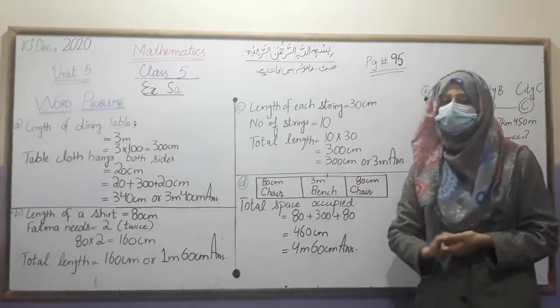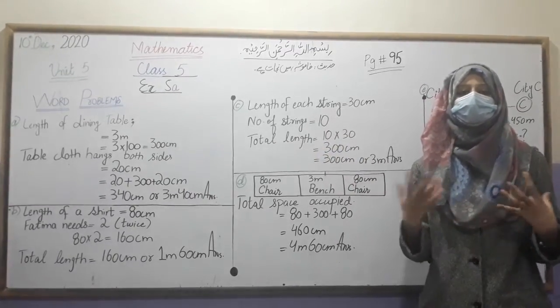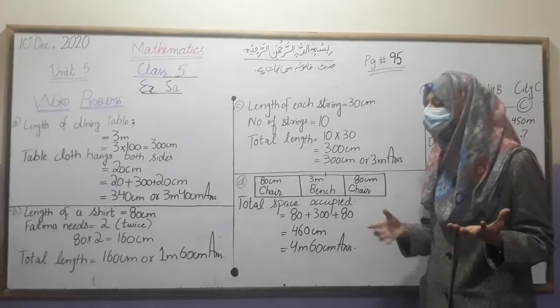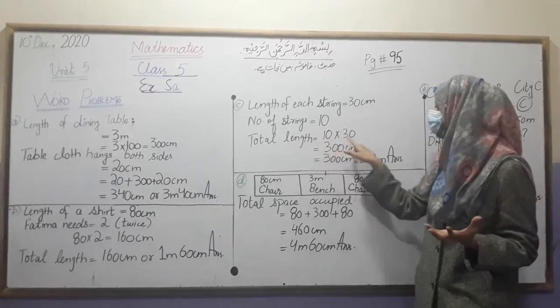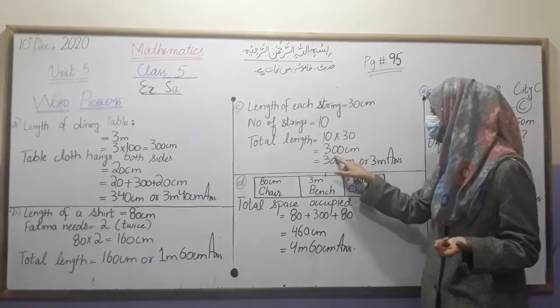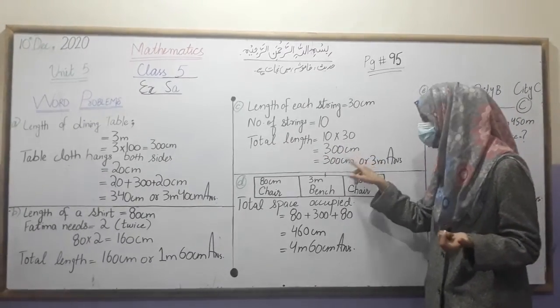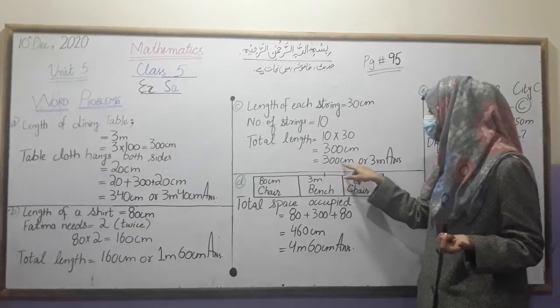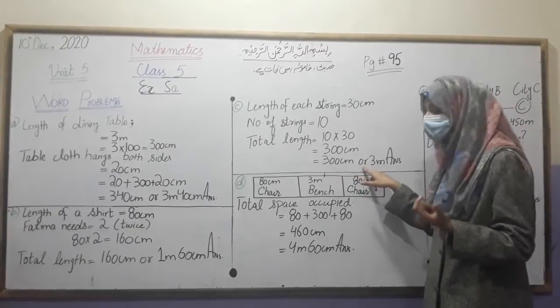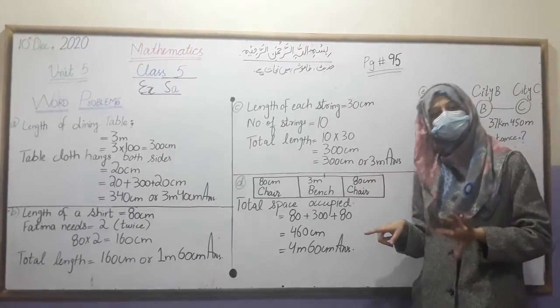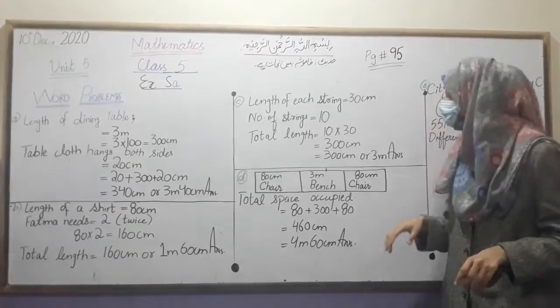Students, what we have done here? We have a total of 10 strings. We need to find the total length of the strings. So we multiply 10 by 10, which gives us 300 centimeters, which equals 3 meters. Our answer is very clear.